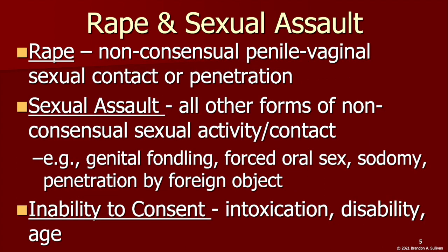One specific type of assault that warrants its own category is rape and sexual assault. Rape is unwanted penile-vaginal sexual contact or penetration, while sexual assault is a more general term for all other forms of unwanted non-consensual sexual contact, such as genital fondling, forced oral sex, or penetration by a foreign object. They can occur in many different settings — intimate partner relationships; and no, married people are not exempt from being an offender or victim.